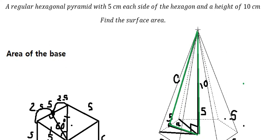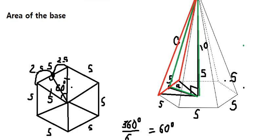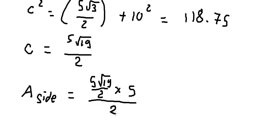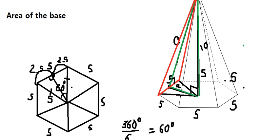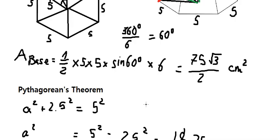We can see the red triangle, where the slant height is the height of the triangular face. The area of one lateral face is (5√19/2) multiplied by the base (5/2), times one half. Since we have 6 sides, we multiply by 6, giving us the total lateral surface area: 75√19 over 2.